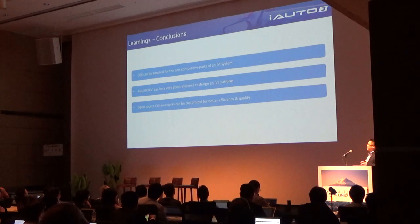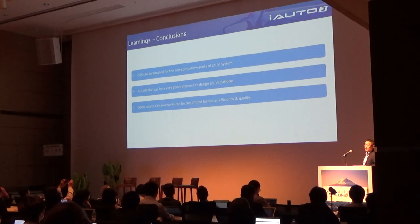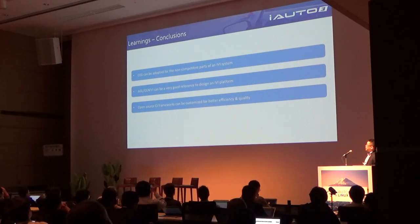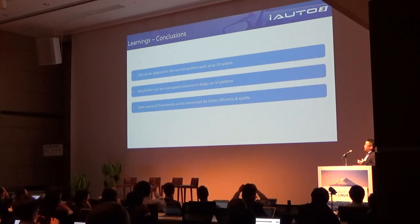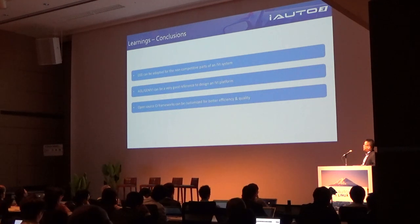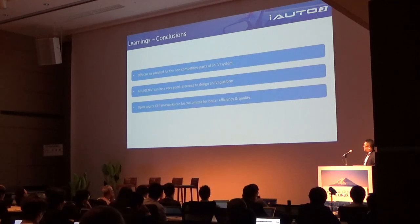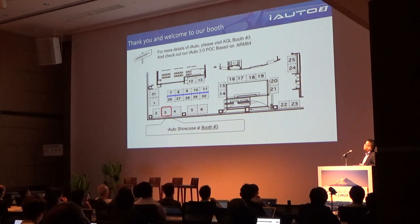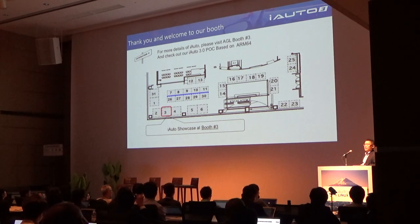In conclusion: OSS can be used for the non-competitive parts of the IBI system. AGL and Genevieve's platform can be a very good reference for designing the IBI platform. And the open source CI framework can be customized for better efficiency and quality. Thank you. We also have a new POC based on ARM64, which should be at Booth M3. Thank you.